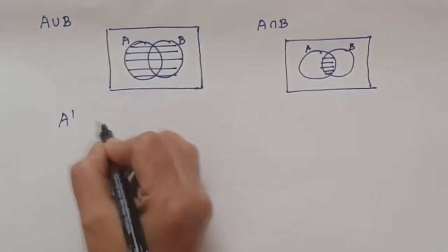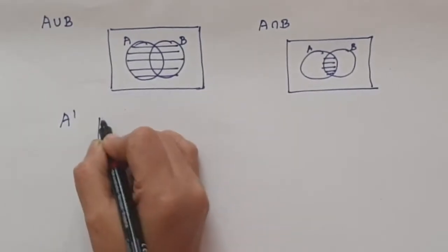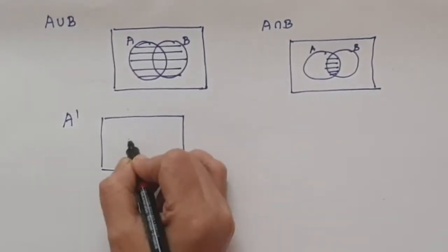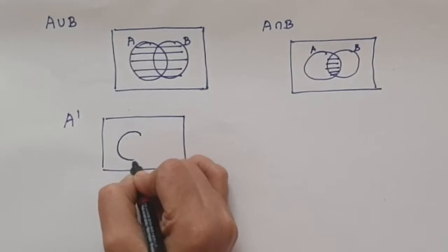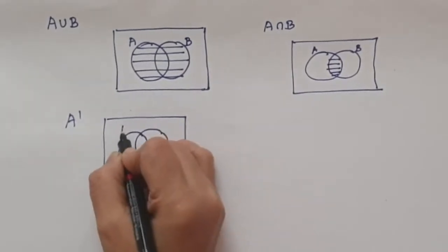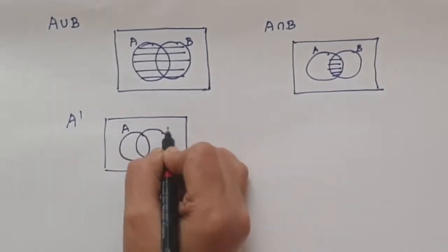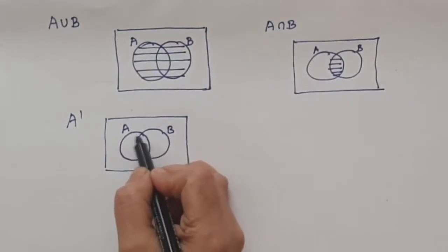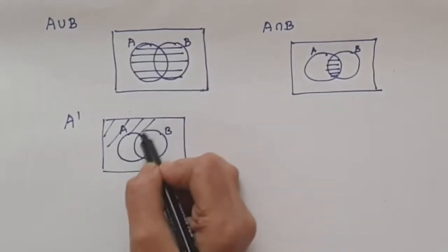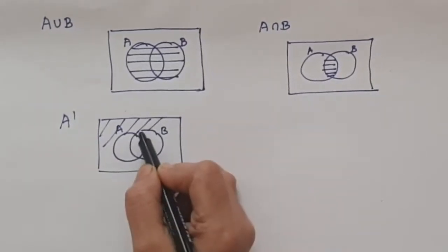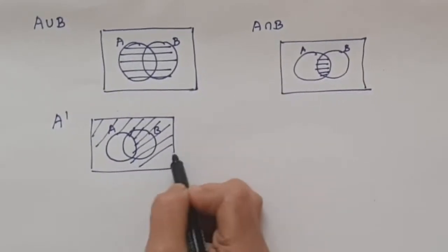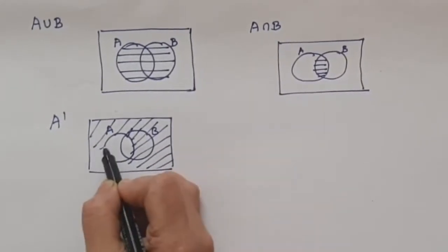Suppose if we have to shade A complement, A complement is nothing but we just leave out set A and shade all the rest of it — that is called A complement. This is circle A, and then we shade everything else other than circle A. So that will give us A complement.